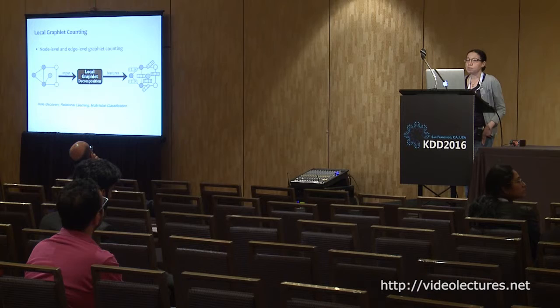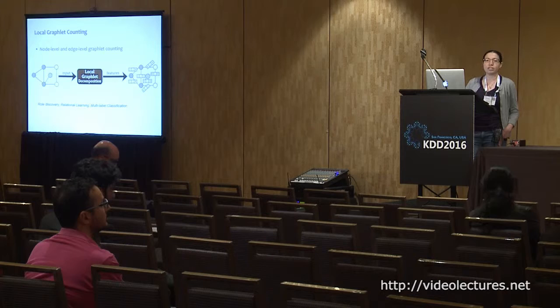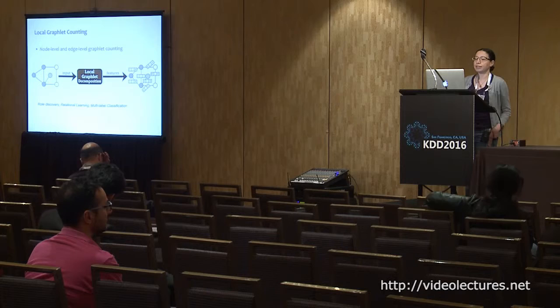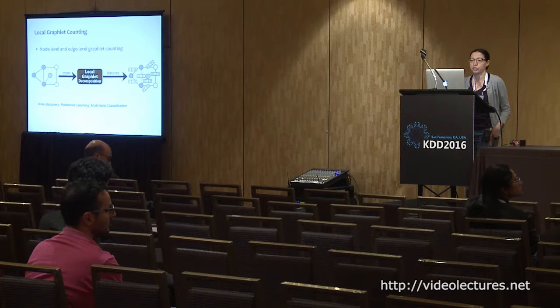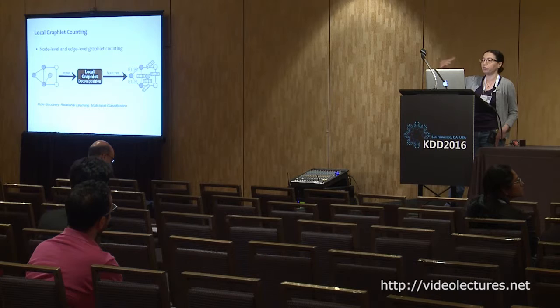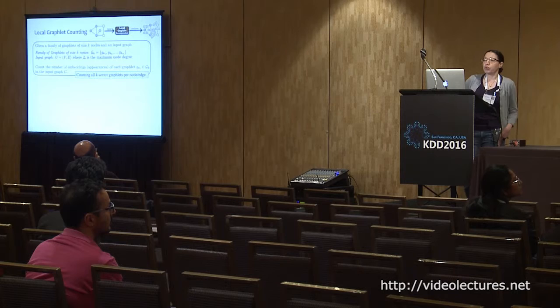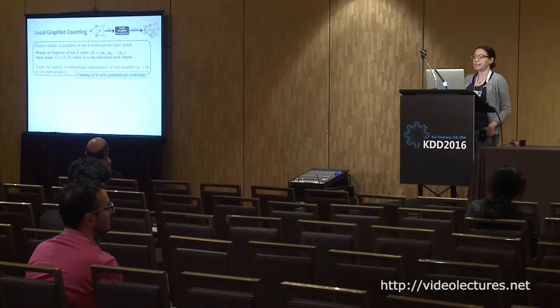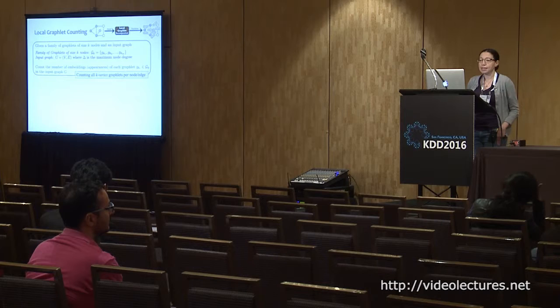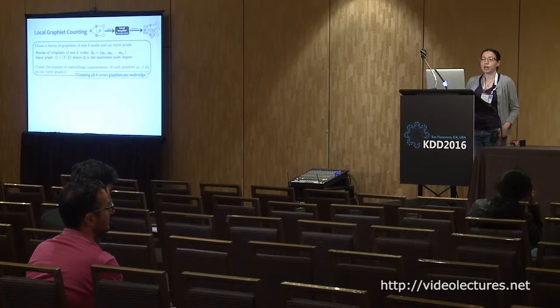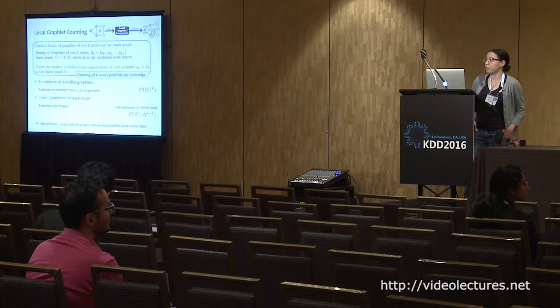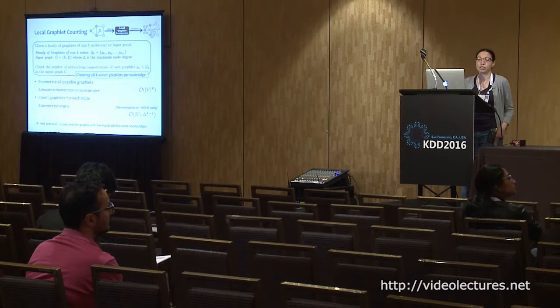The topic we are going to talk about today is mainly local graphlet counting, which is very related to extracting those features for machine learning tasks. Given an input graph, we apply a technique called local graphlet decomposition to extract features at the node or edge level. What you extract at the end is a feature vector of all graphlet counts at the node level or the edge level. Formally, given a family of graphlets of size k and an input graph of maximum degree delta, the goal is to count all appearances or embeddings of each graphlet in the input graph, per node or per edge.